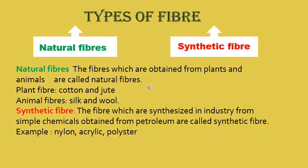Natural fibers are the fibers which are obtained from plants and animals. Plant fibers include cotton and jute. Animal fibers include silk and wool. Synthetic fibers are the fibers which are synthesized in industry from simple chemicals obtained from petroleum. For example, nylon.